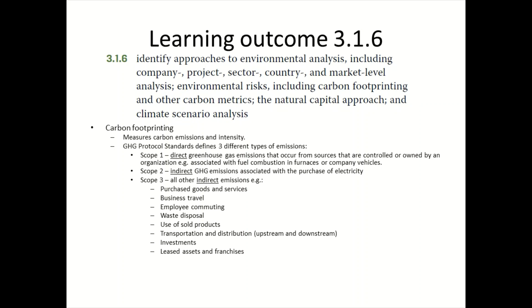Scope one is the measure of direct greenhouse gas emissions occurring from sources that are controlled or owned by an organization — for example, fuel combustion in furnaces or company vehicles. Scope two and three are indirect. Scope two covers emissions from the purchase of electricity. Scope three comprises all other indirect emissions other than scope two — the scope can be extremely wide; for example, even employee commuting can add to scope three emissions.